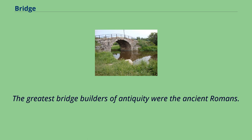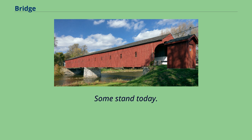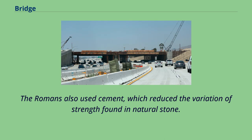The greatest bridge builders of antiquity were the ancient Romans. The Romans built arch bridges and aqueducts that could stand in conditions that would damage or destroy earlier designs. Some stand today. An example is the Alcantara Bridge, built over the River Tagus in Spain. The Romans also used cement, which reduced the variation of strength found in natural stone.